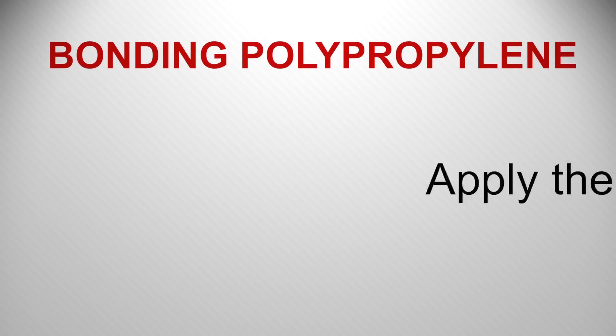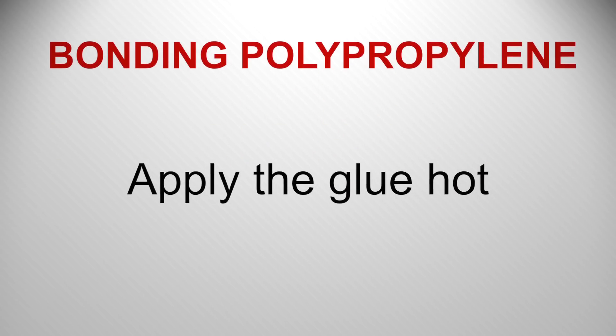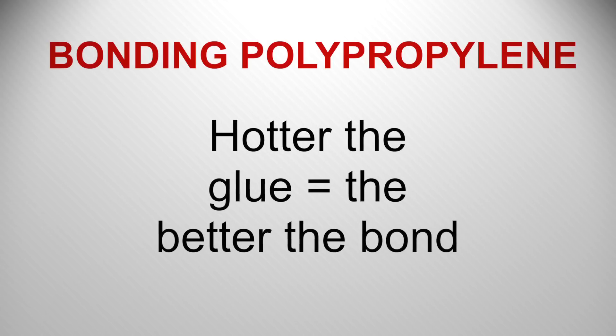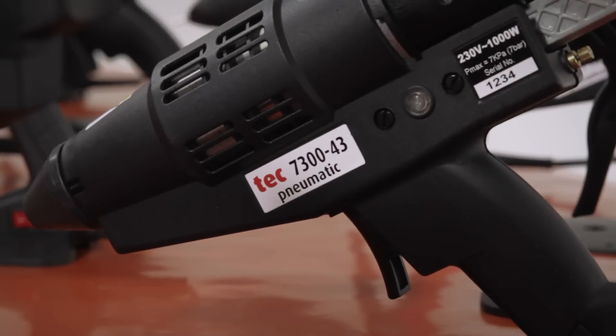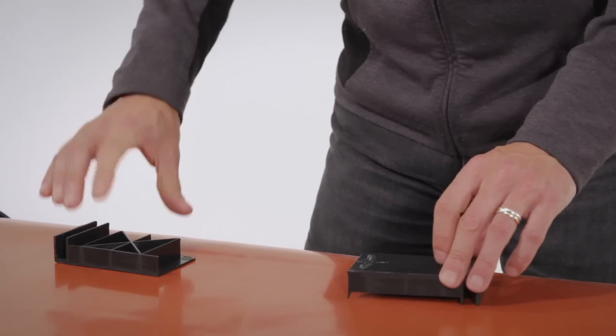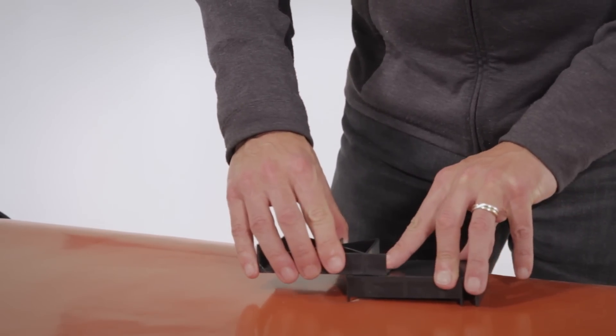The key to bonding polypropylene is to apply the glue hot. The hotter the glue, the better the bond. You need to use a larger glue gun, get the glue down fast, bring the components together quickly and apply compression.